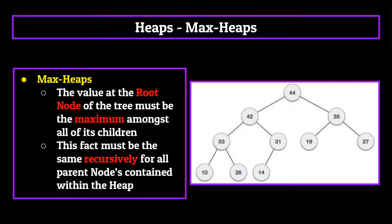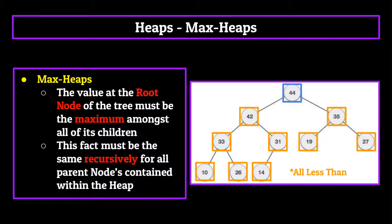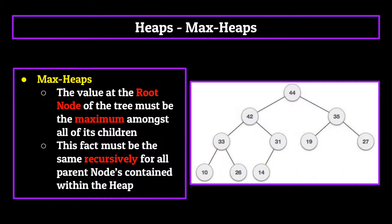Max heaps, on the other hand, are the exact opposite. In a max heap, the value at the root node of the tree must be the maximum amongst all of its children. And this fact must be recursively the same for all parent nodes contained within the heap. If you take a look at the example max heap we have up on the screen now, you'll see that this is again the case. 44 is the root node and also the largest value within the heap. And if you look at say the subtree which is headed by the 35 node, you'll see that it is greater than all of its child nodes, both 19 and 27.